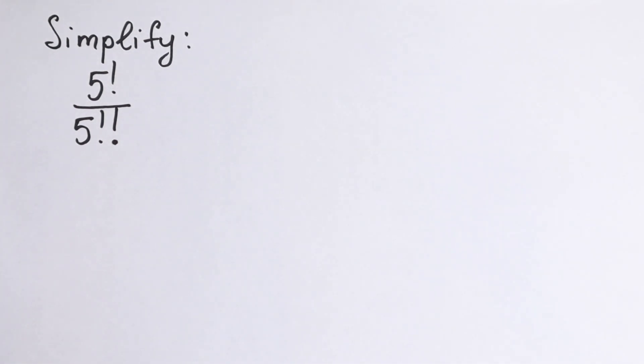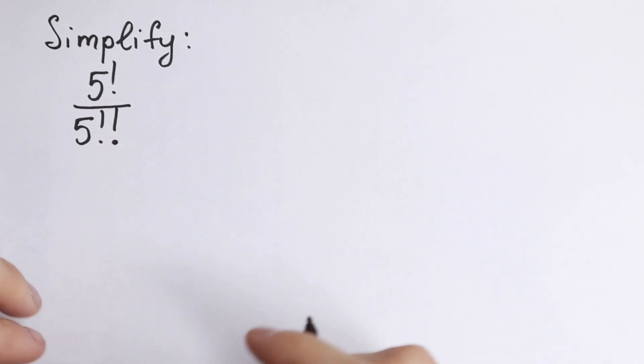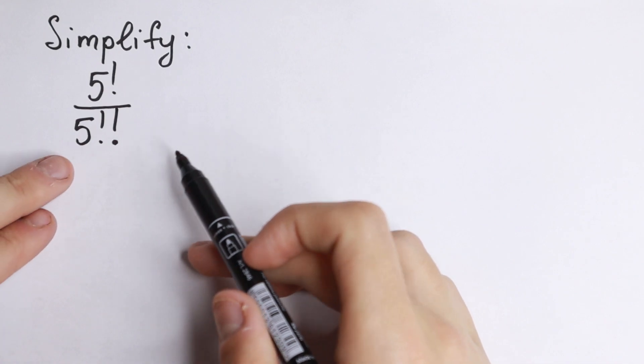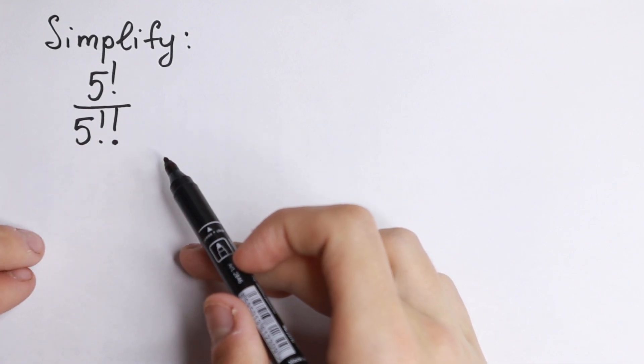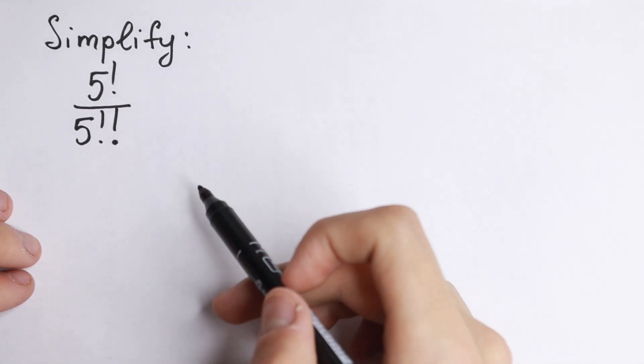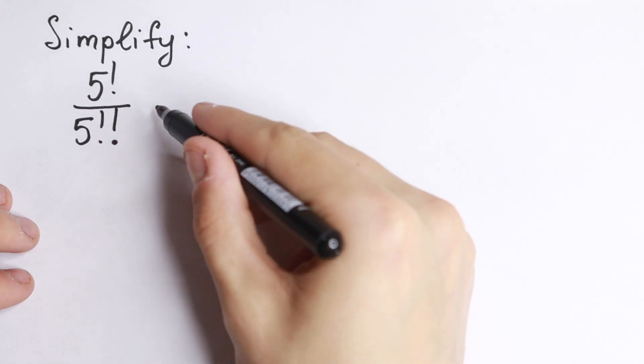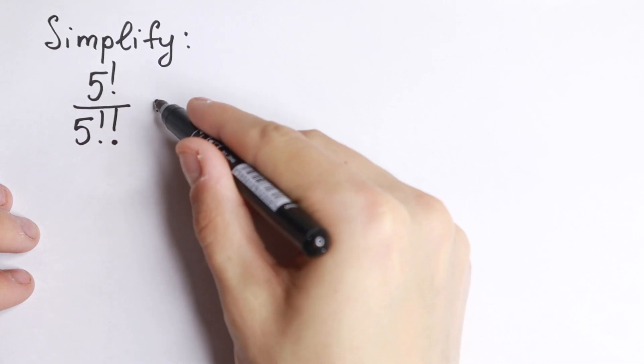Hello everyone! Welcome back to High Mathematics. Real quick video today. We have 5 factorial all over 5 with double factorial sign. So how can you find this answer?